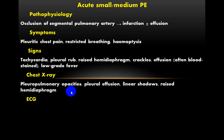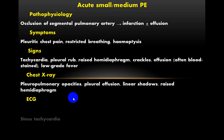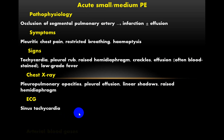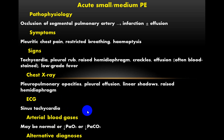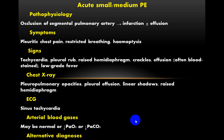Radiologically, there are pleural or pulmonary opacities, pleural effusion, linear shadows, and raised hemidiaphragm. ECG changes include sinus tachycardia. Arterial blood gases may be normal, or show decreased PaO2 or decreased PaCO2. Differential diagnoses include pneumonia, pneumothorax, musculoskeletal chest pain, and pleurisy, all of which may present with pleuritic chest pain.